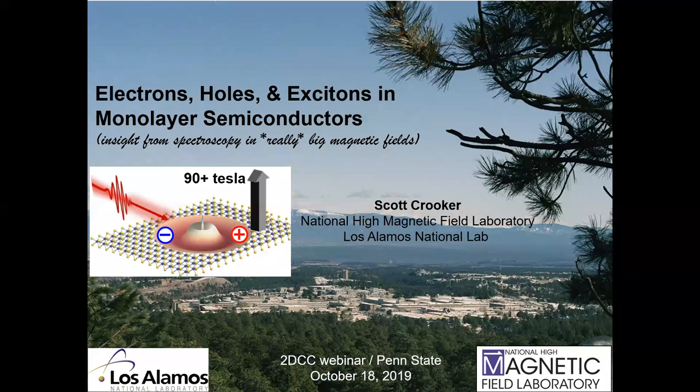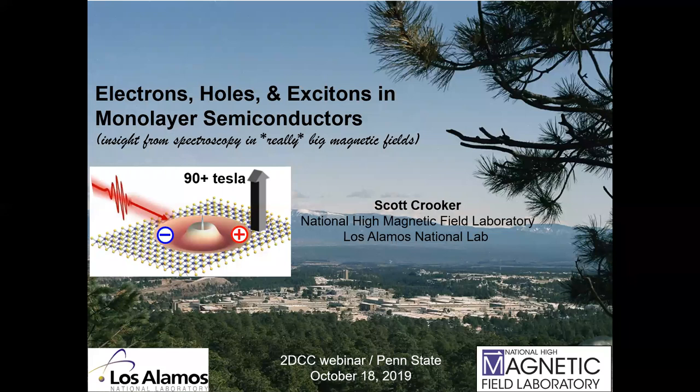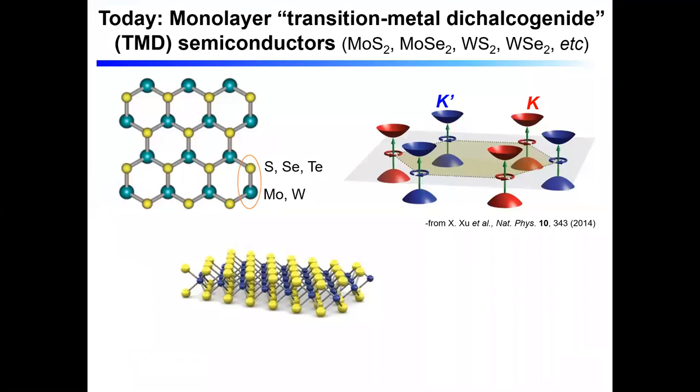In the last several years, our optical spectroscopy group at the Magnet Lab has been using these very powerful magnetic fields to look at some of the optical properties of this new family of transition metal, atomically thin, monolayer transition metal dichalcogenide semiconductors. That's going to be the subject of the talk today. The title is Electrons, Holes, and Excitons in Monolayer Semiconductors, or how we can reveal fundamental properties of these materials by doing optical spectroscopy in really big magnetic fields.